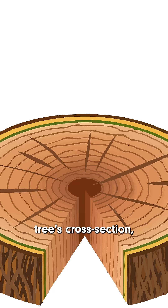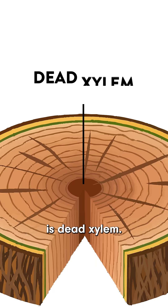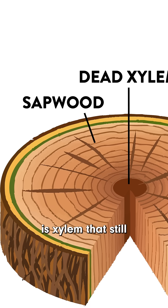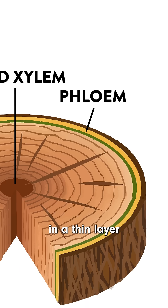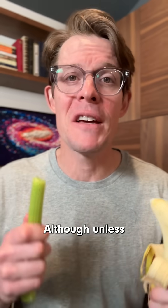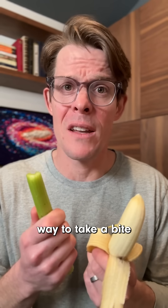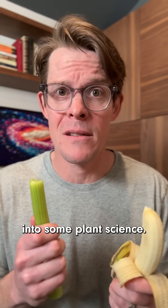If you were to look at a tree's cross-section, the heartwood at the middle is dead xylem, the sapwood a bit farther out is xylem that still pumps water, and the phloem is in a thin layer just inside the bark. Although unless you're a beaver, these are a much easier way to take a bite into some plant science.